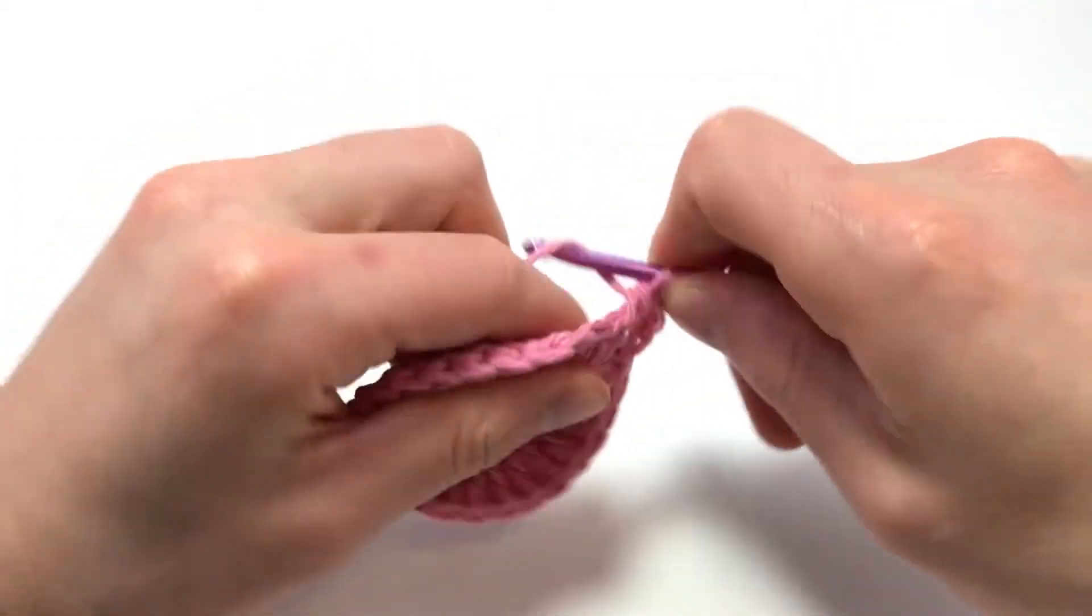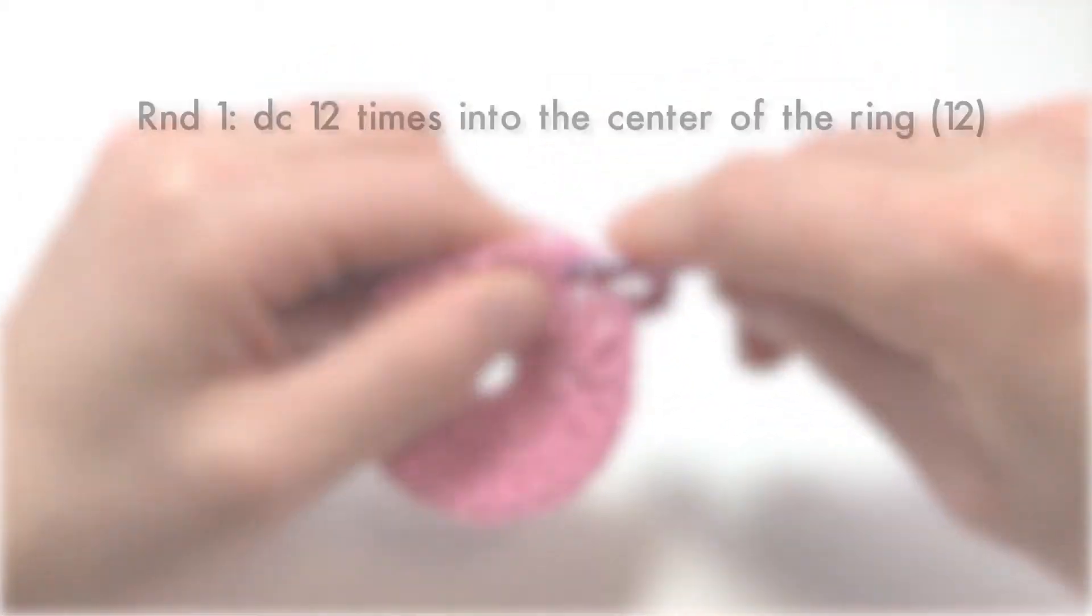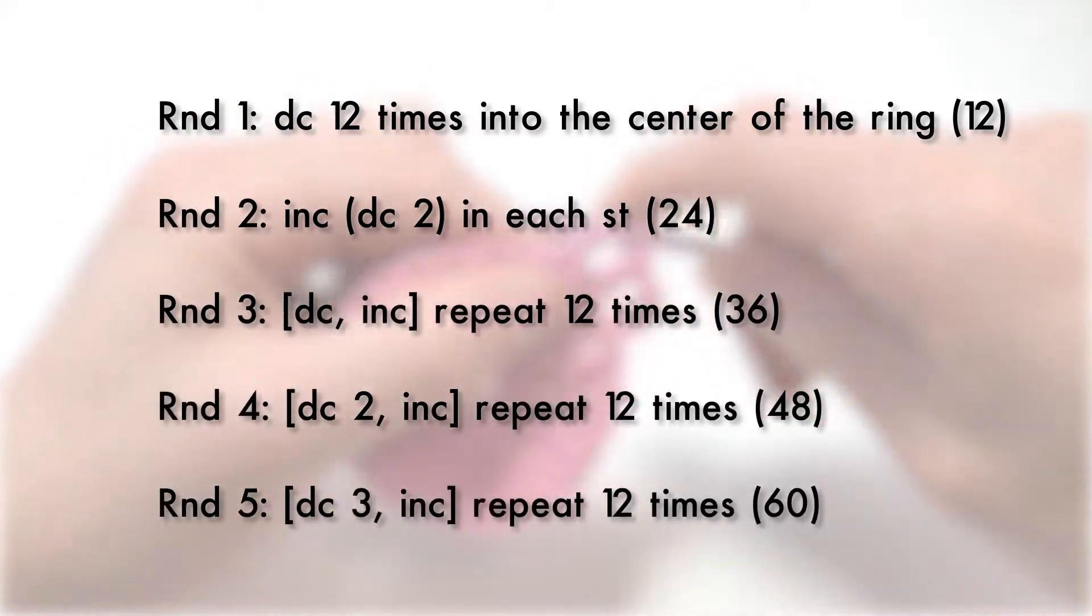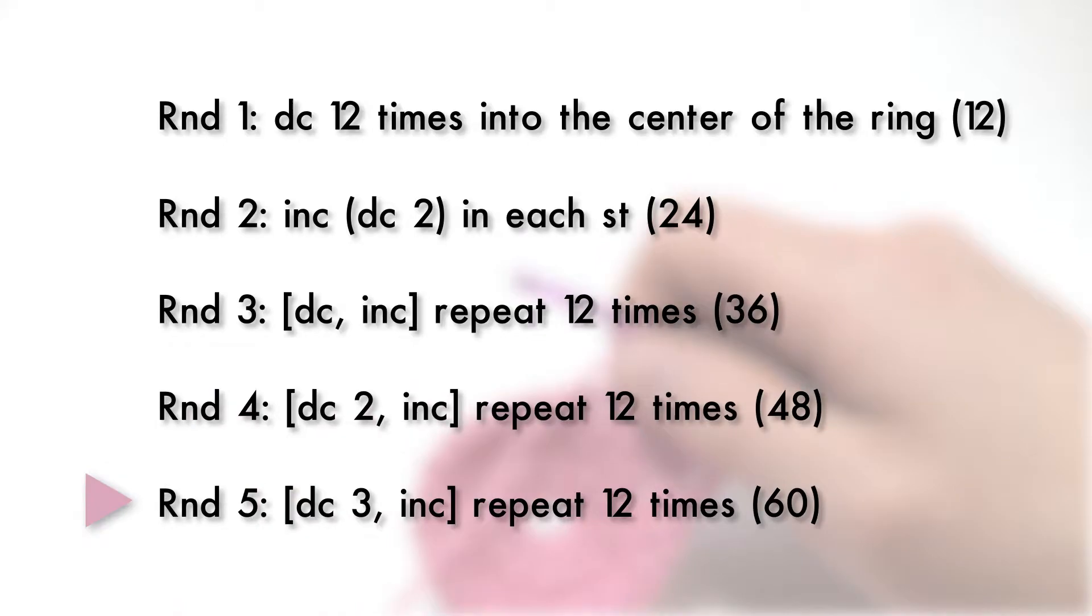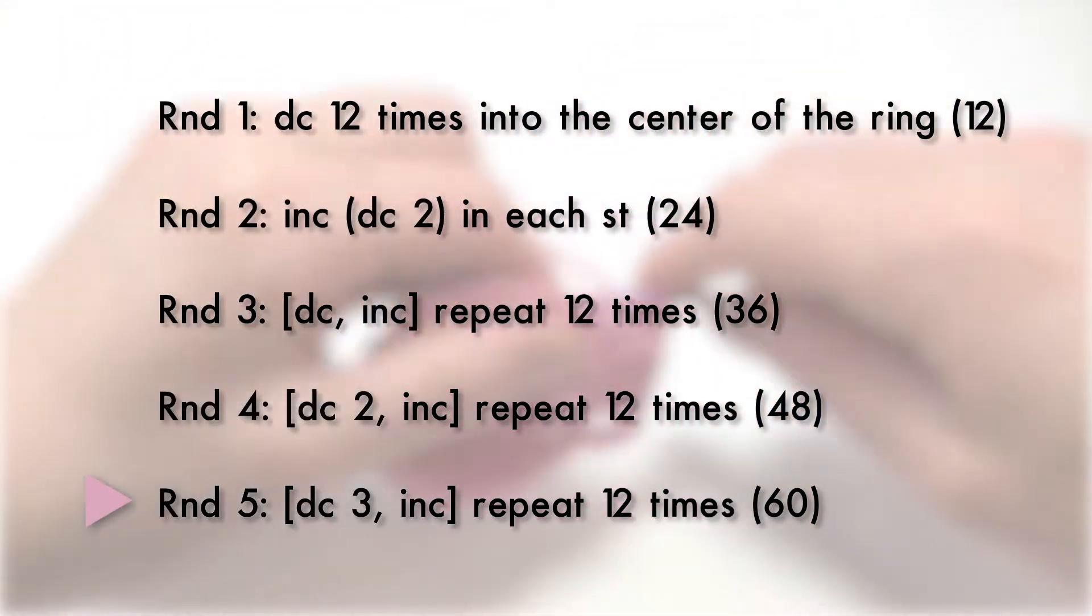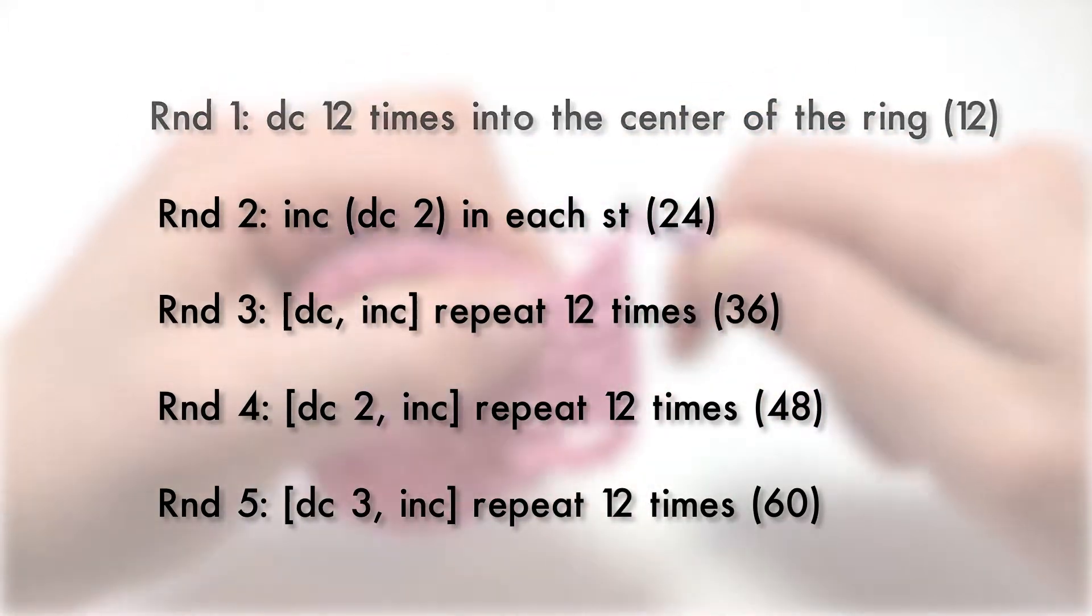If you want to continue and make it bigger, here's what would be the next few rounds. For round 3 you double crochet 1 and then increase, repeating that 12 times total, and ending up at 36 stitches. For round 4 you would double crochet 2 and then increase, repeating 12 times total, and ending up at 48 stitches. And for round 5 you will double crochet 3 and then increase, repeating that 12 times, ending up at 60 stitches total. You might kind of see a pattern here.